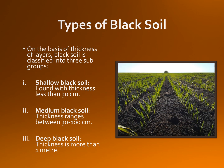Types of black soil: on the basis of thickness of layers, black soil is classified into three subgroups — shallow black soil, medium black soil, and deep black soil. Shallow black soil has a thickness of less than 30 centimeters. It exists in Satara Hills in Madhya Pradesh, Nagpur and Satara in Maharashtra, and Bijapur and Gulbarga districts in Karnataka. This type of soil is suitable for crops like jowar, rice, wheat, gram, and cotton.